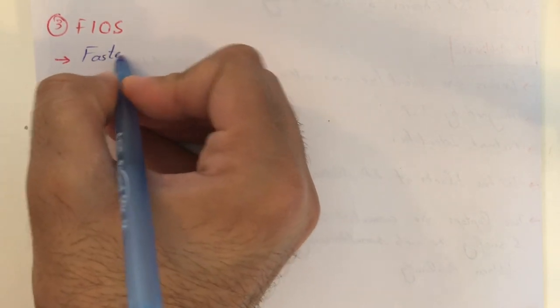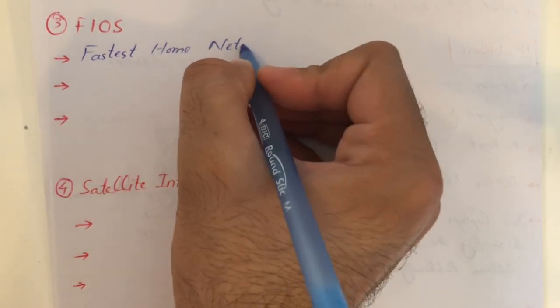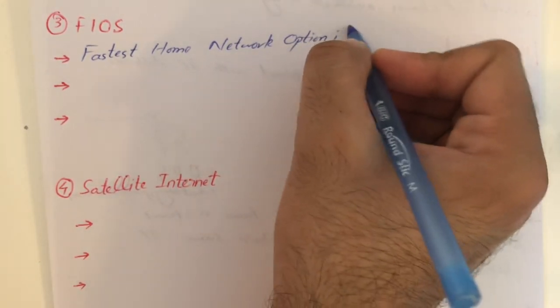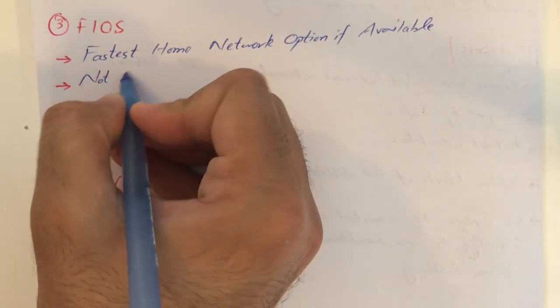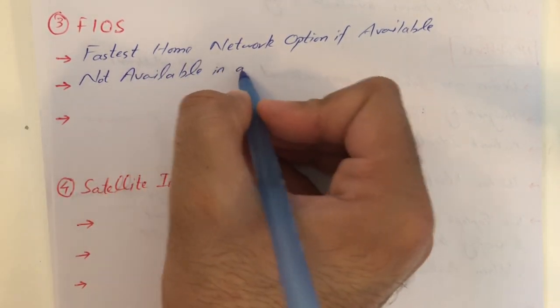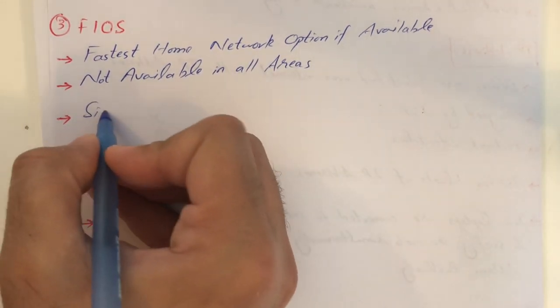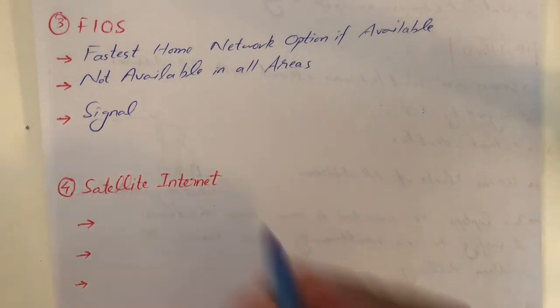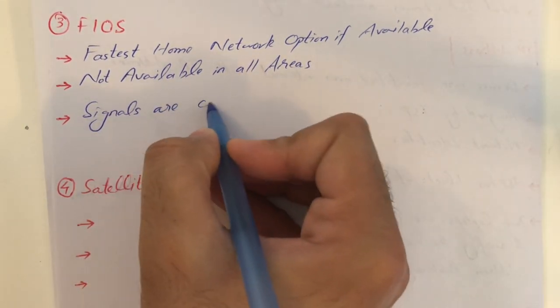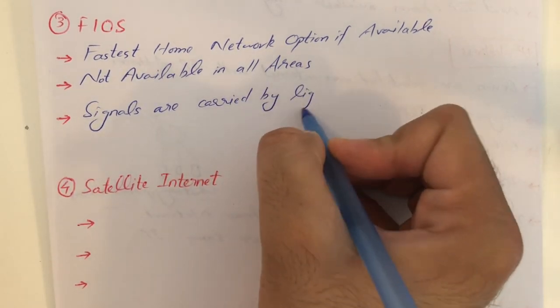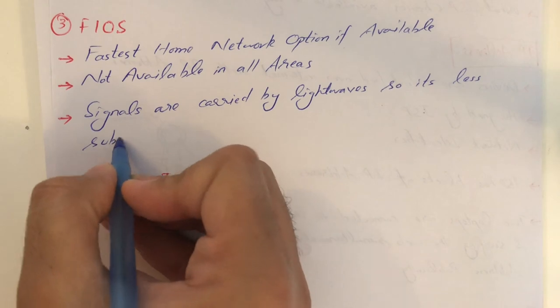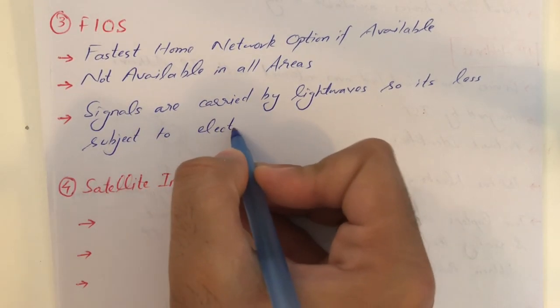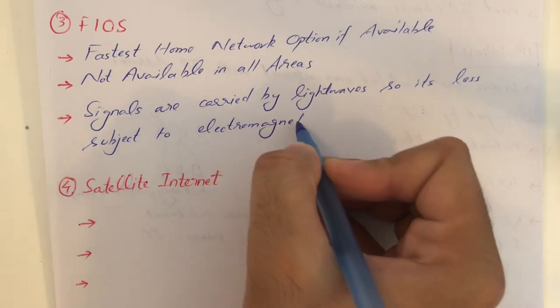Next is fiber optics. Please remember: fiber optic is the fastest home internet option, if available — it's not available in all areas. Also remember that there is very little or no electromagnetic interference with fiber optics because signals are carried by light waves, so it is less subject to electromagnetic interference.